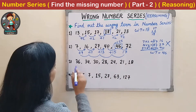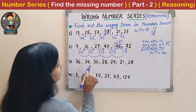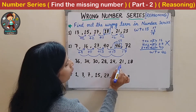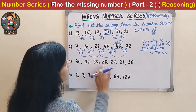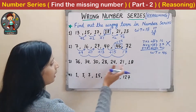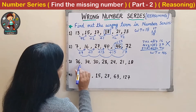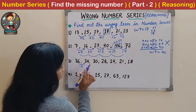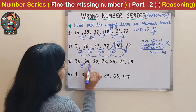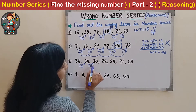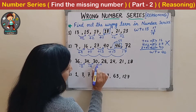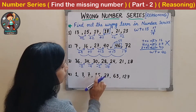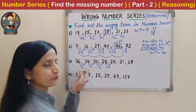Now check the next question: 36, 34, 30, 28, 24, 21 and 18. Here we can see that numbers are decreasing every time. Let us check by how much. 36 minus 2 gives 34. Then from 34 we subtract 4 to get 30. Then again minus 2, then again minus 4. So the pattern here is minus 2, minus 4, minus 2, minus 4.